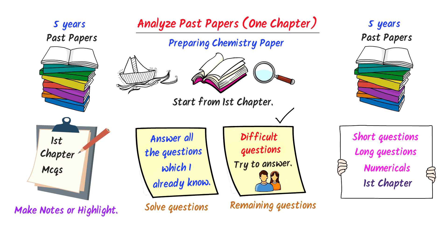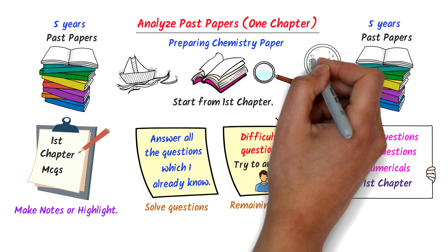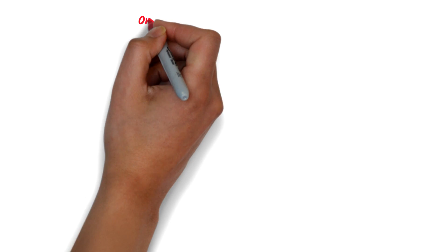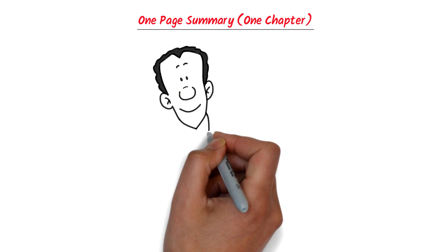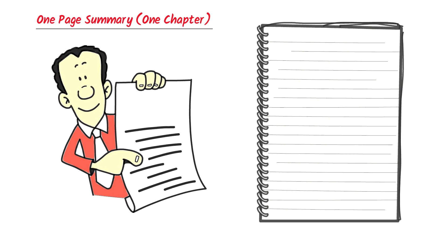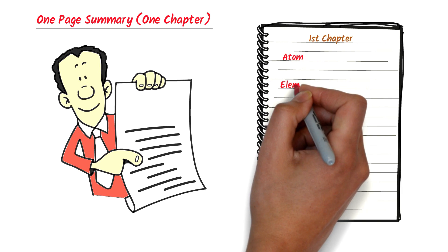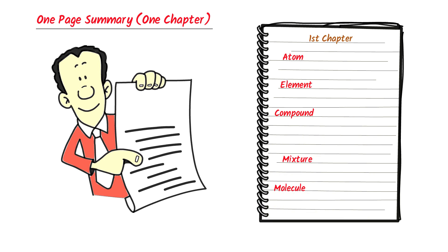Believe me, it will not take that much time but the output would be huge. Now, the second tip is to make one page summary of one chapter. Once I learn one chapter, I will try to write down all the important headings on a single page. For example, in case of first chapter of chemistry, I will write the important headings like atom, element, compound, mixture, molecule, etc.